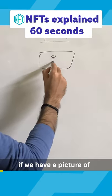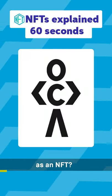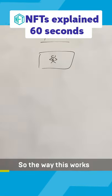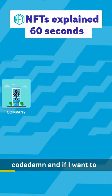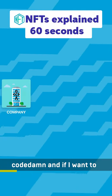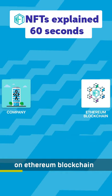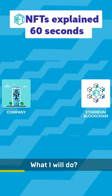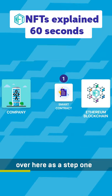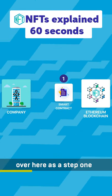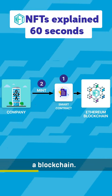For example, if we have a picture of CodeDamn, how this could be created as an NFT. The way this works is as follows. If I'm a company like CodeDamn and I want to create my own NFTs on the Ethereum blockchain, what I will do is create a smart contract as step one, and step two, I would mint them on a blockchain.